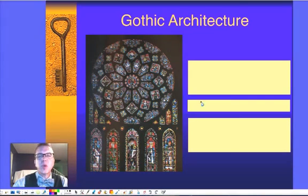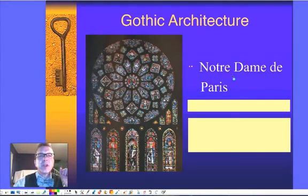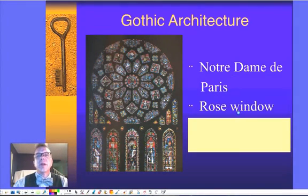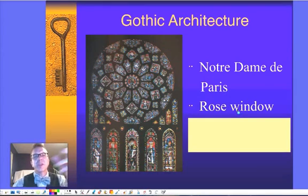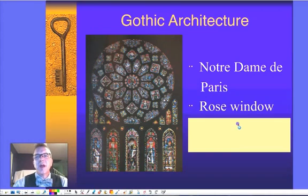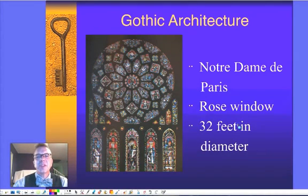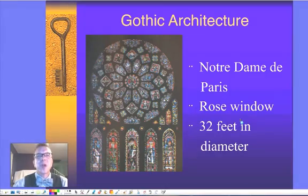And this is the rose window from Notre Dame de Paris. This is the big rose window — any kind of big circular stained glass windows are referred to as a rose window in a cathedral. This one is 32 feet in diameter. If you're looking at my class, we're not even 20 feet from the front of the board to the back of the room.